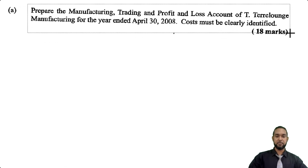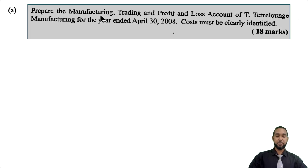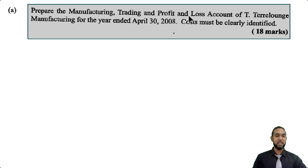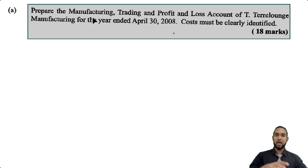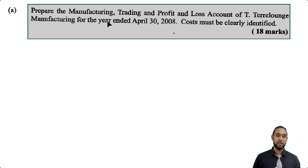The first part of the question, for 18 marks, asks us to prepare the manufacturing, trading, and profit and loss account of T Terralounge Manufacturing for the year ended April 30th, 2008, with costs clearly identified. They used to have one long statement including both pieces. For the purposes of this solution, I'm going to do the manufacturing account separately from the income statement, because I think they're most likely to ask you to do one and then the other.